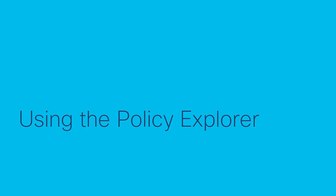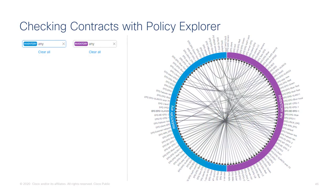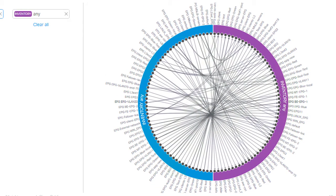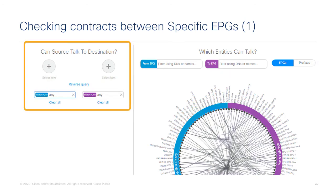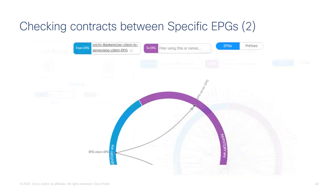There are some other interesting tools outside the scope of this presentation. Namely, the policy explorer, which helps with visualization of which contracts are in place between EPGs. It shows all EPGs in the fabric and all contracts with other EPGs. You can narrow down by entering EPG names for a more specific view. It can also run queries about whether a given source can talk to a given destination — a kind of what-if query.